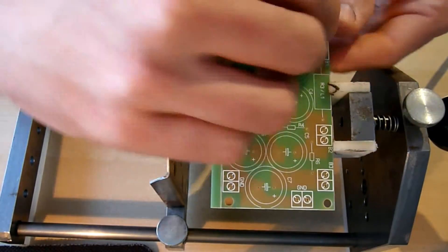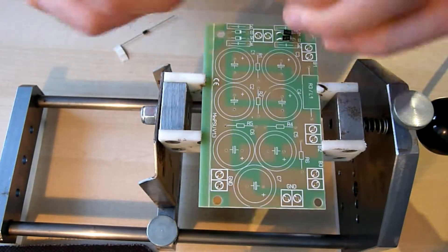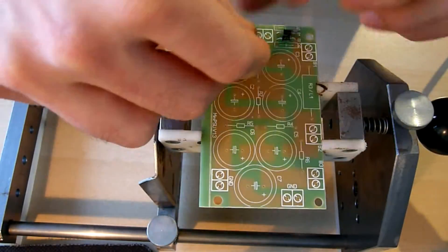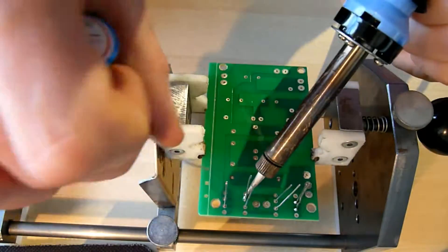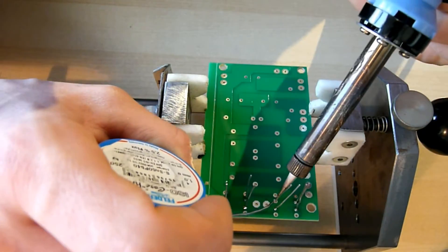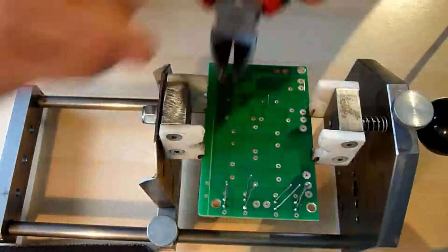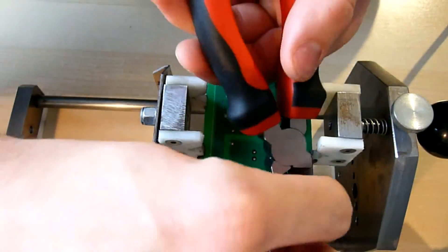As always we start with the smallest components, the diodes. Make sure to check their polarity. As you can see the spots for soldering and the components are bigger than in my pedal project, so you can work with a bit more heat on your soldering iron.